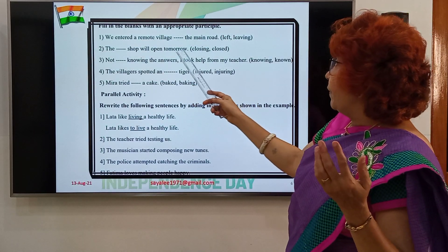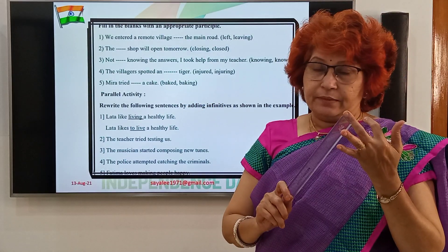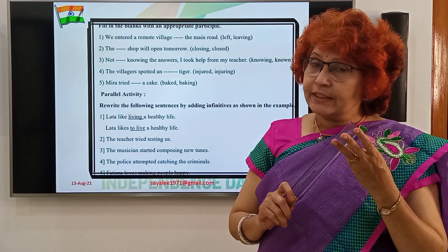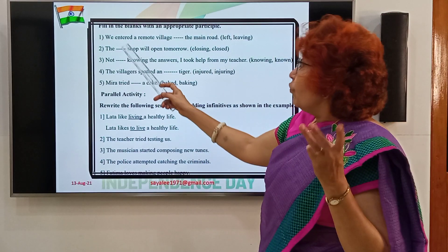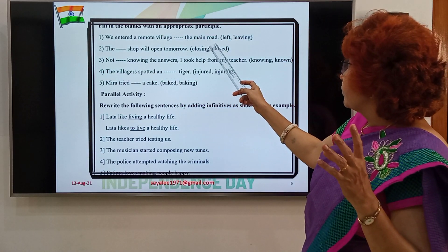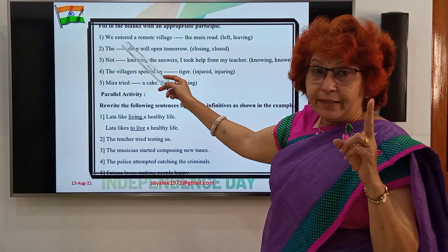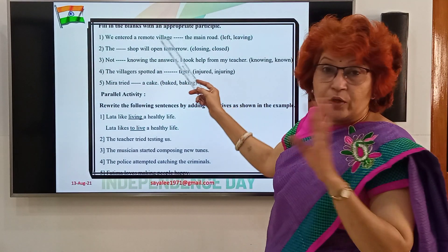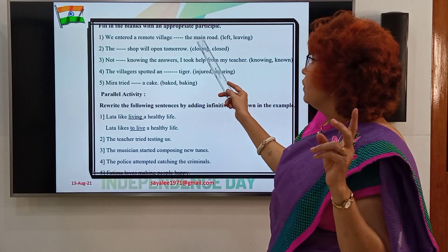Fill in the blanks with the appropriate participle — present participle or past participle. We entered a remote village, dash the main road — use 'leaving' here, because in one sentence you cannot use two past tense forms together. So: We entered a remote village, leaving the main road. Next: The dash shop will open tomorrow — a closed shop. 'Closed' is past participle used as an adjective here.